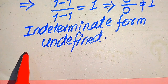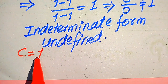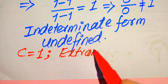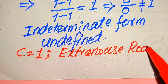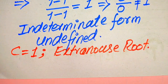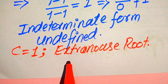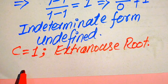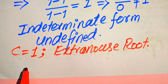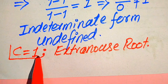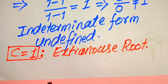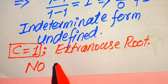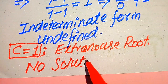Our conclusion is that C equals 1 is the extraneous root of the given equation. The root which satisfies our given question statement is called the solution of the given equation, and the root which does not satisfy it is called the extraneous root. Here C equals 1 is the extraneous root. In the first method we cannot get any value of C that satisfies the given equation, so the final conclusion is that it has no solution.